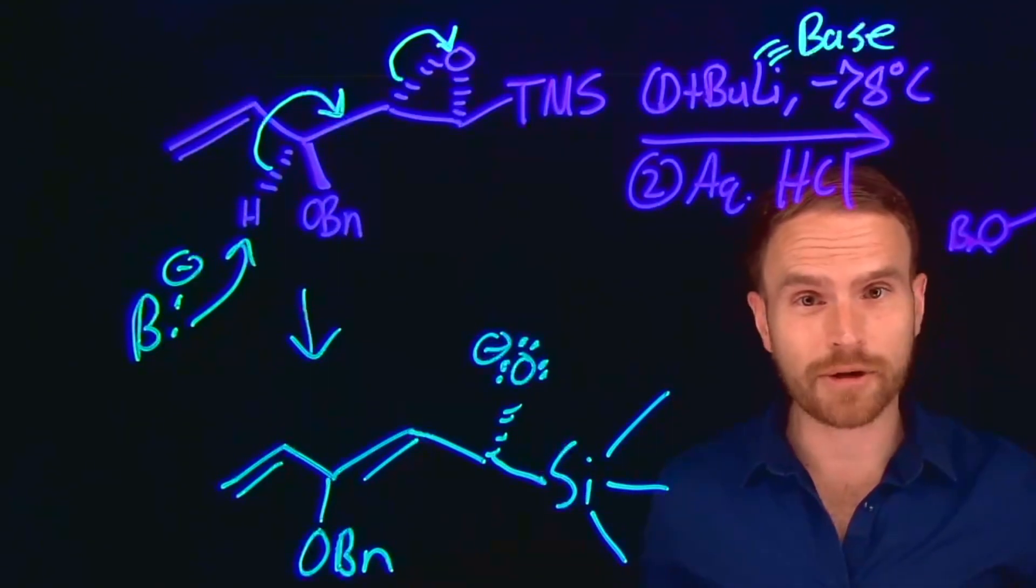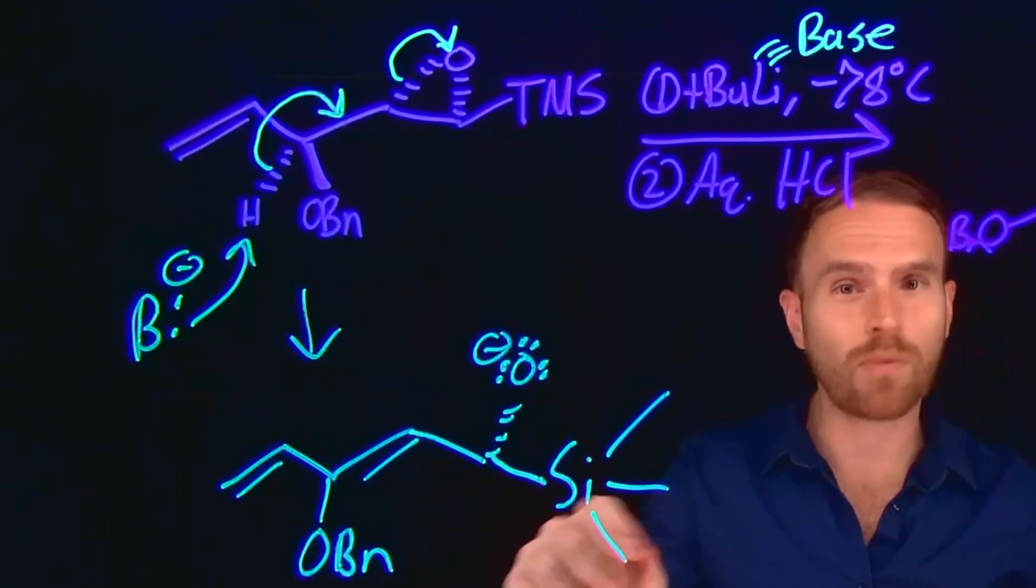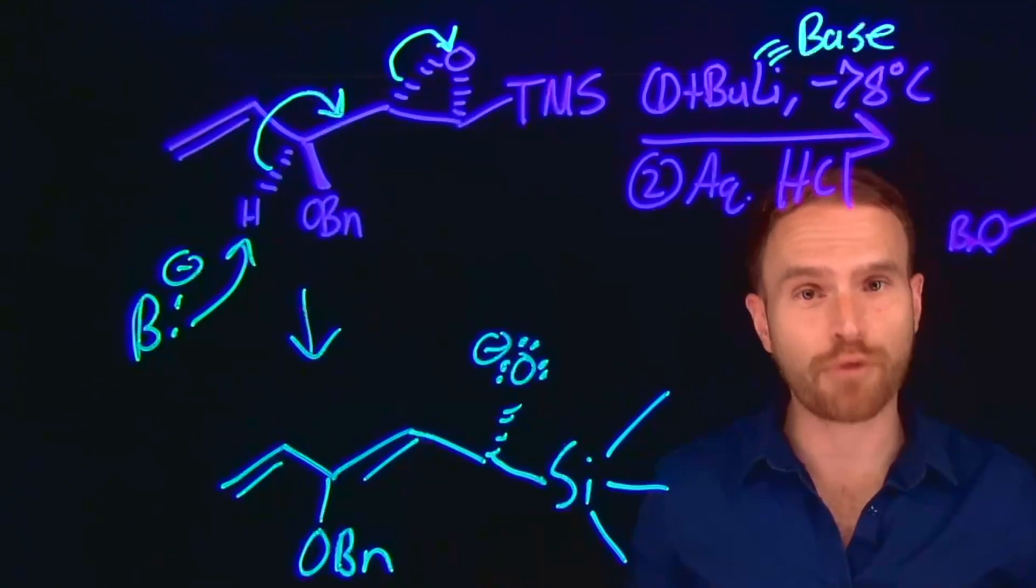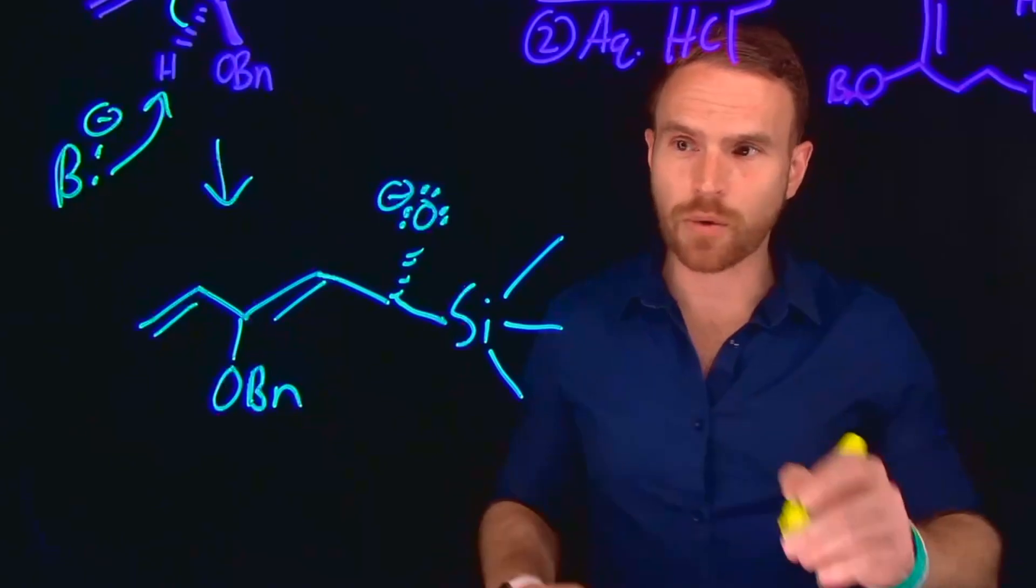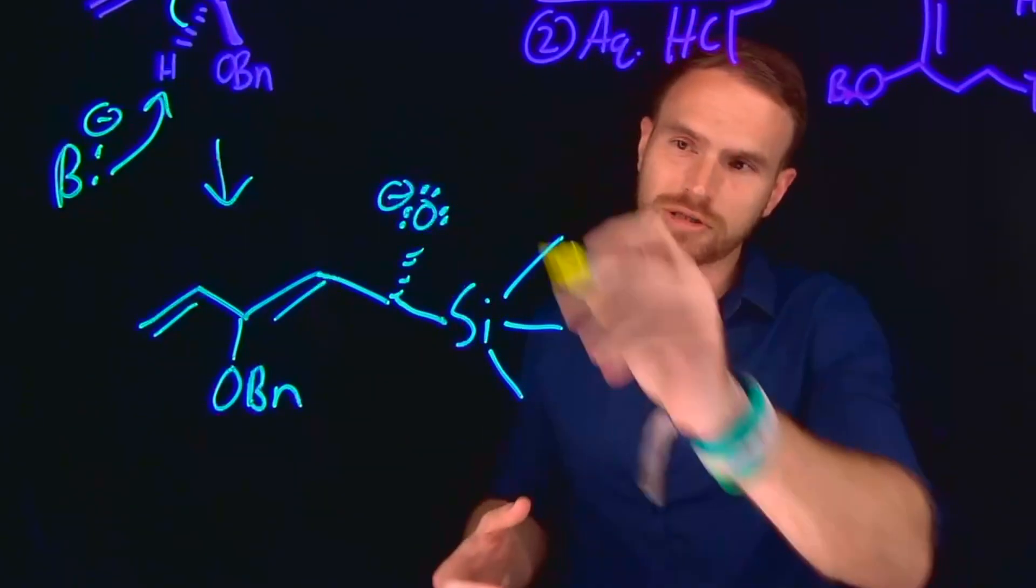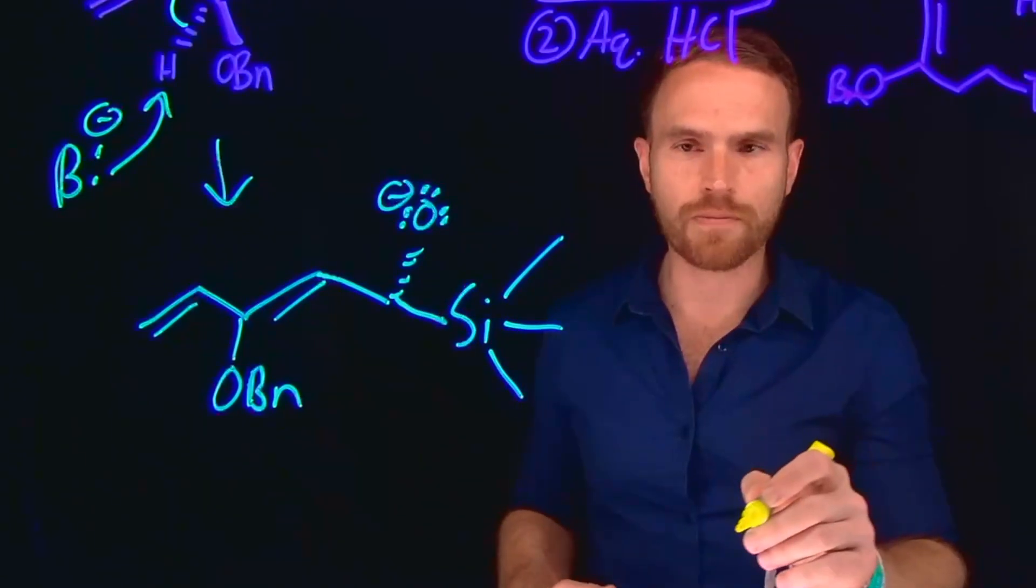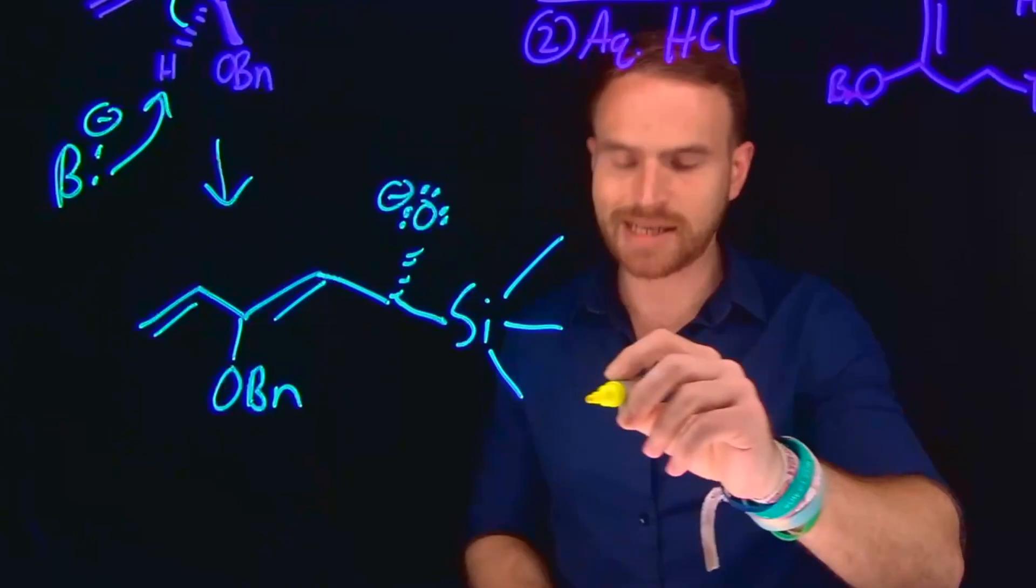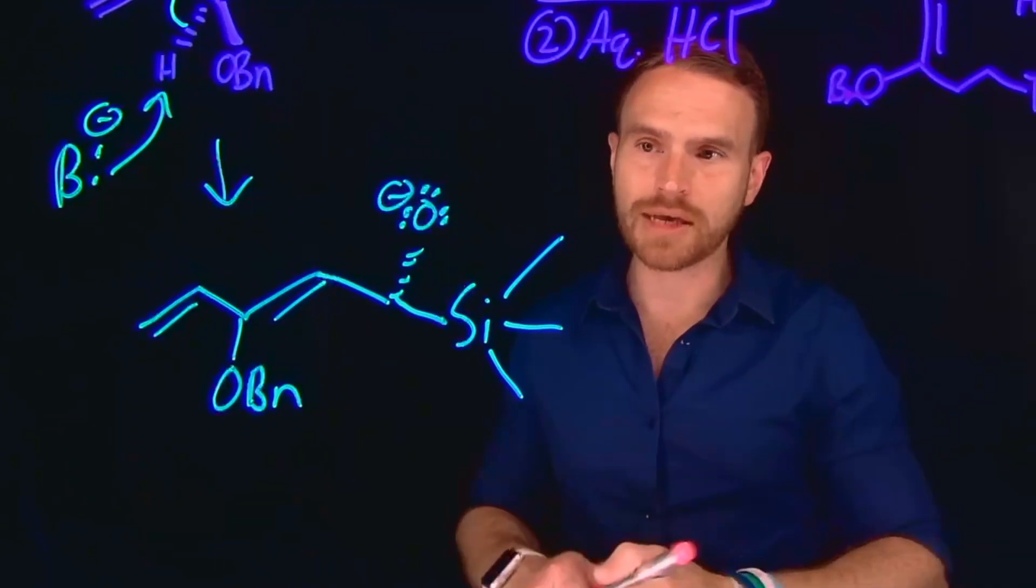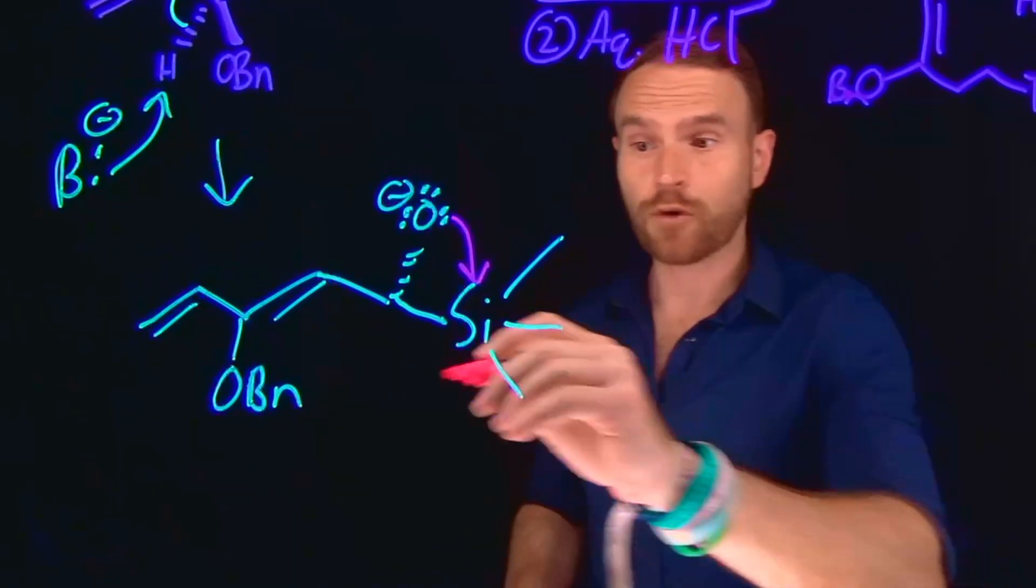And for those of you really familiar with a bunch of named reactions, hopefully what you start to see is that what is going to come next is what's known as a Brook rearrangement. So in Brook rearrangements, you end up with a carbon atom that contains a negatively charged oxygen, largely through deprotonation of an alcohol, but then a neighboring trimethylsilyl group where what can happen next is the coordination of the oxygen to the Lewis acid of this silicon. And this is going to form a new product.